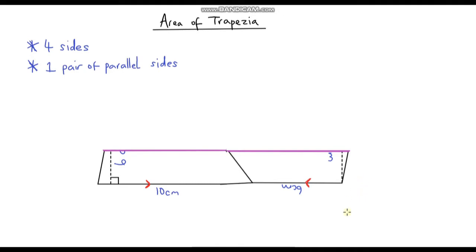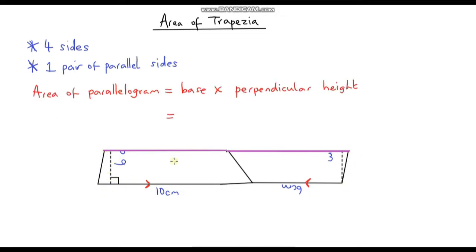If you've already watched my video on areas of parallelograms, you'll know how to calculate the area of this shape. To recap, the area of a parallelogram is the base multiplied by the perpendicular height. So to find the area of our parallelogram, what is the base? Well the base goes from here all the way up to here — that distance is 10 centimetres, and then from here to here is 6 centimetres. So the total base is just 10 plus 6, which is 16.